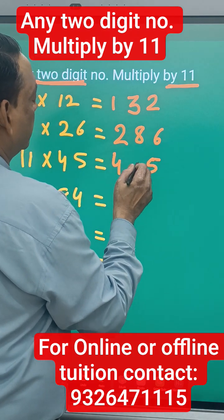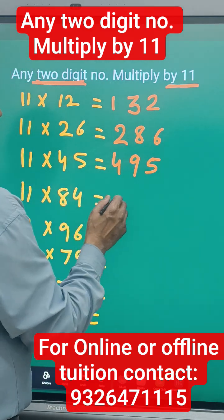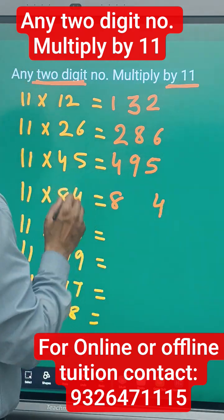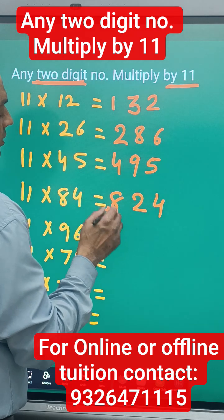Now look at this here: 84. 8 plus 4 is 12. So 12, you write only 2 here and 1 with this you have to add. So actually the answer will be 924.